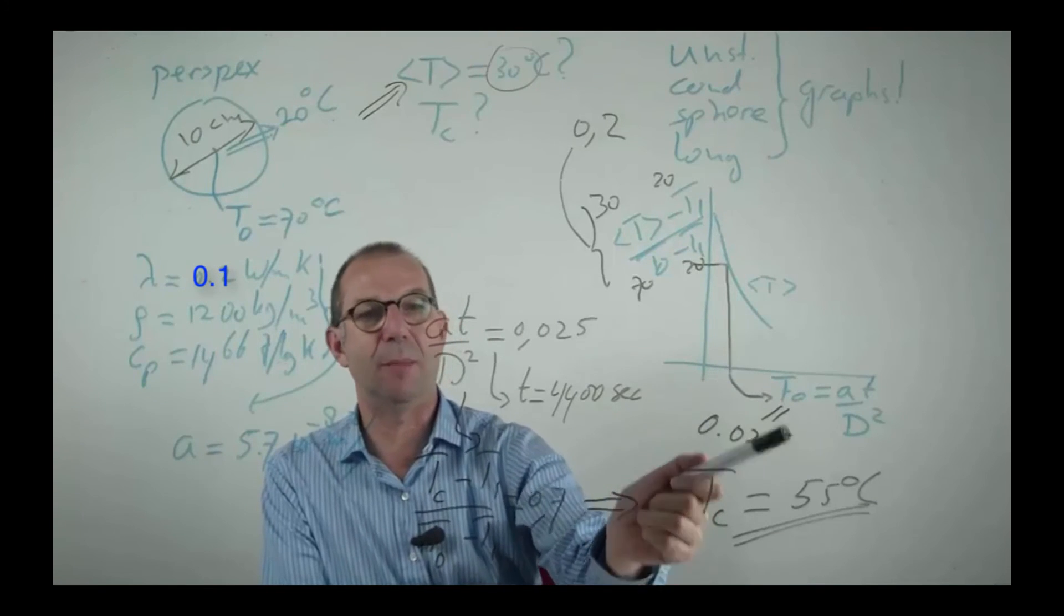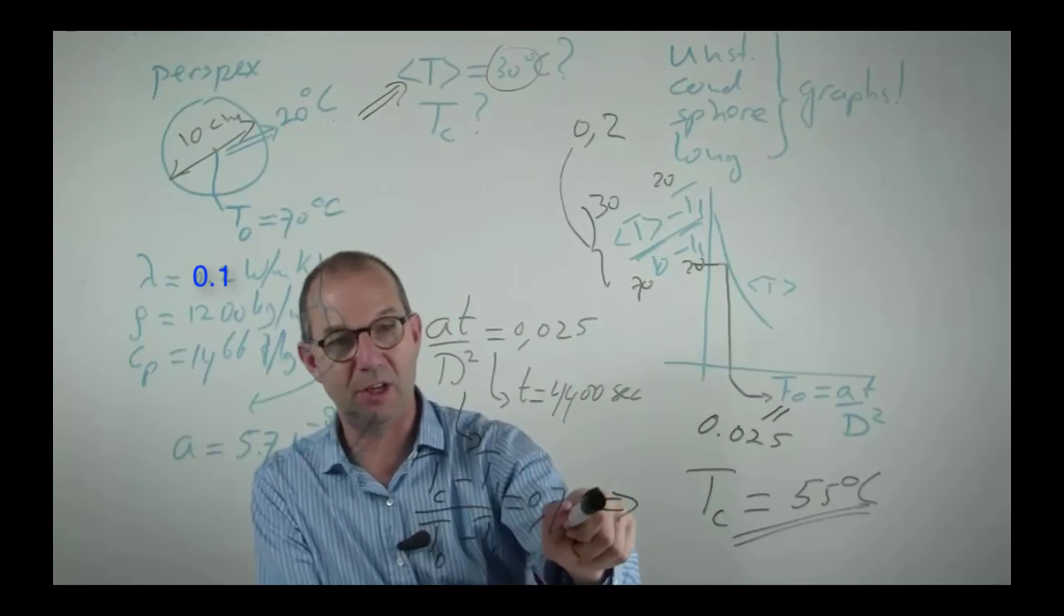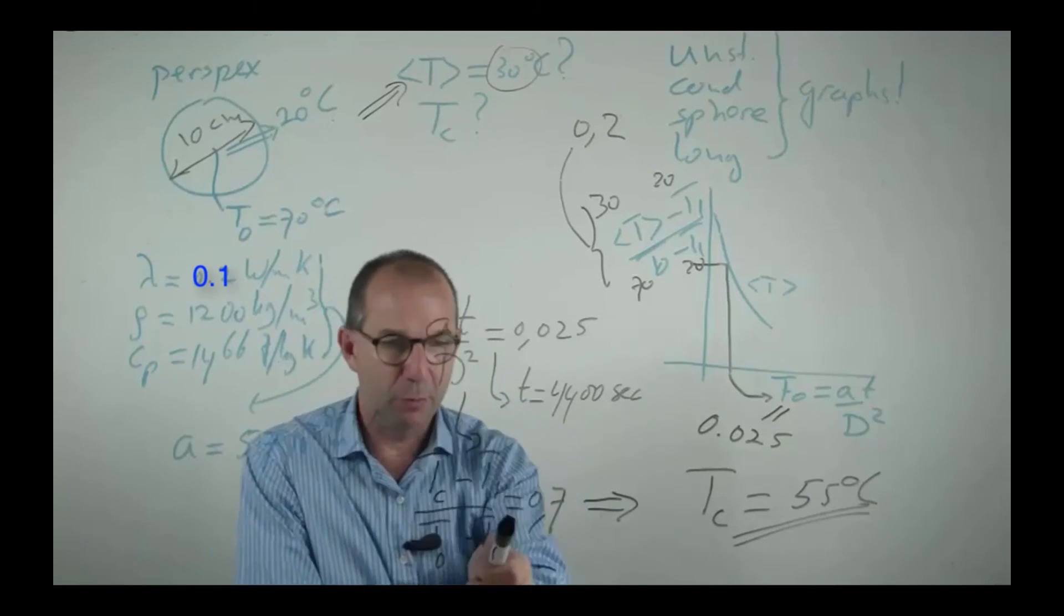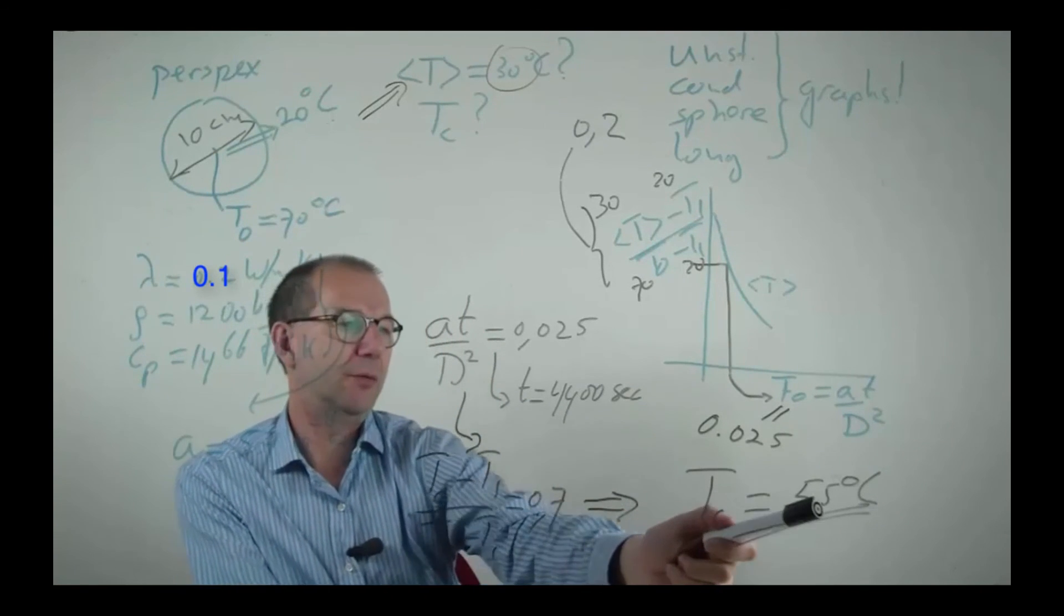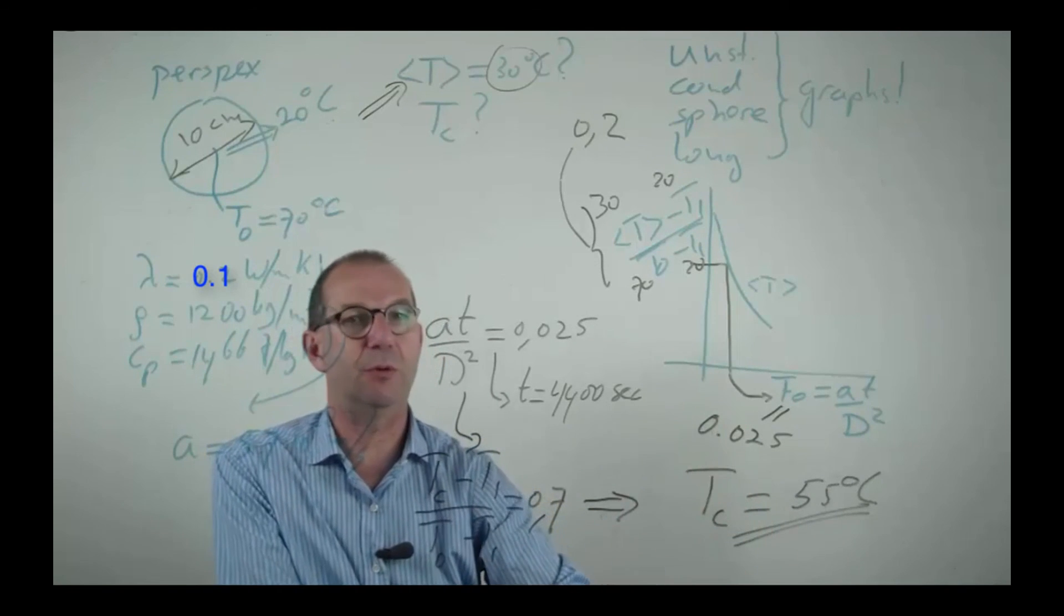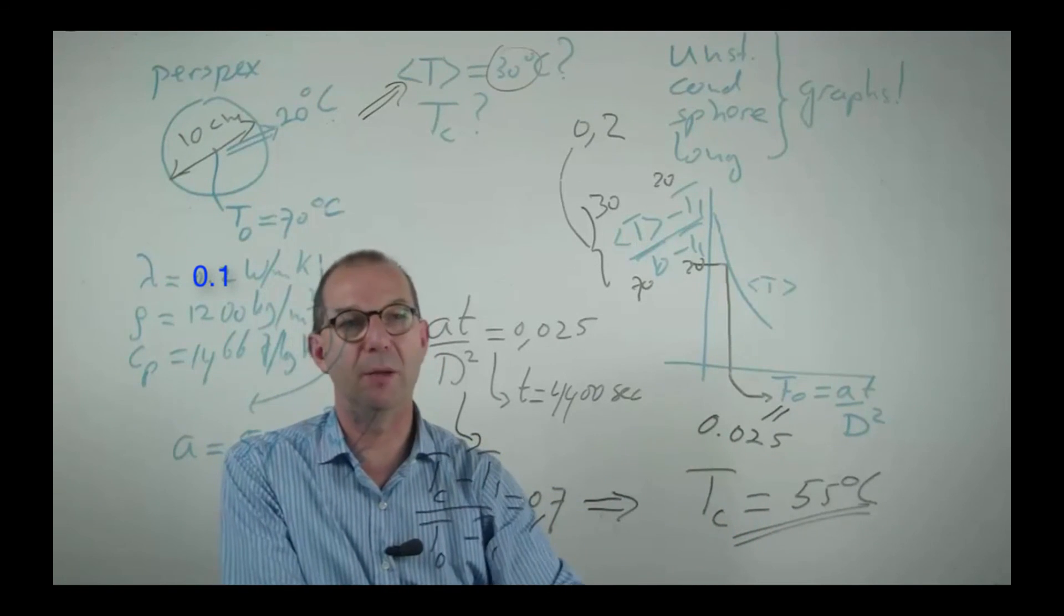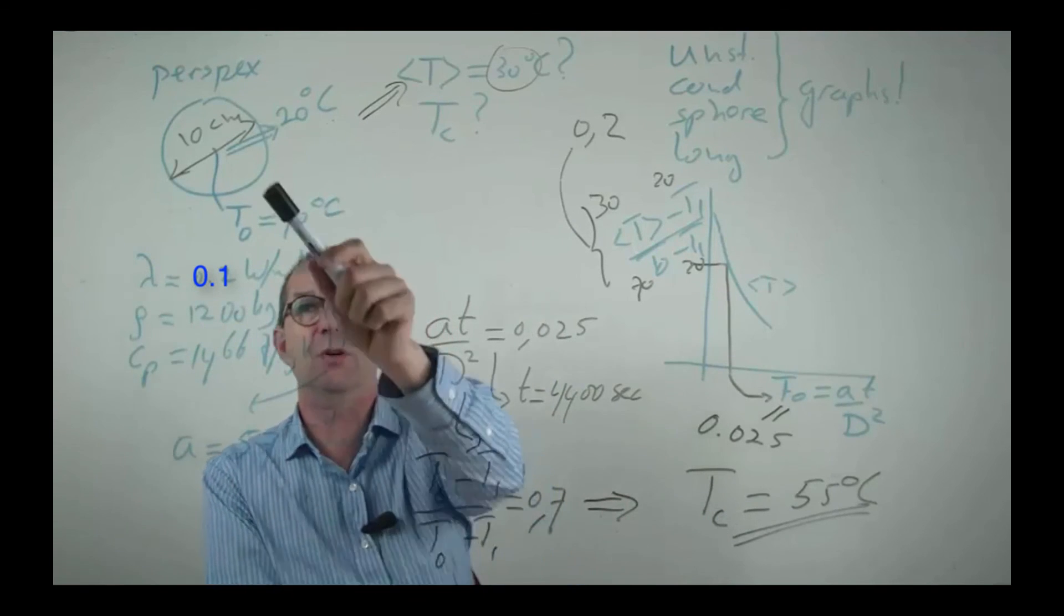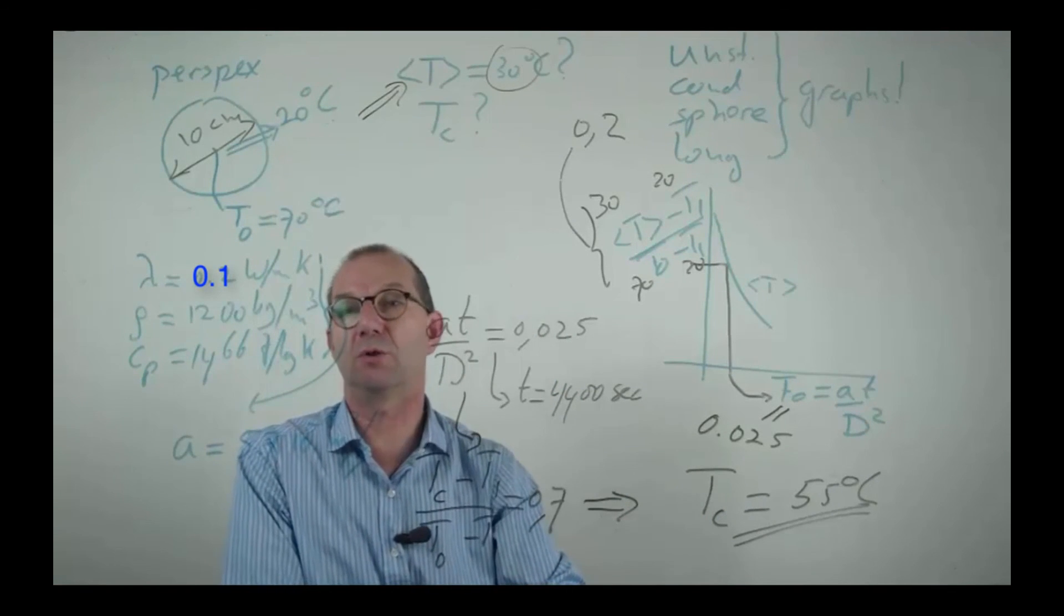At that dimensionless time I read off the center graph and I find that the dimensionless temperature of the center equals 0.7 and out of that I get the center temperature is 55 degrees, lagging behind quite a bit compared to the mean, as we have already guessed of course, because the center is the slowest one to respond.